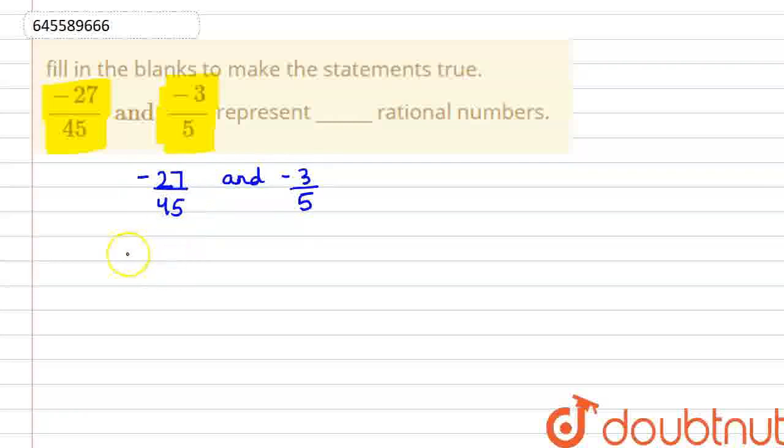Okay, so if we divide it, minus 27 divided by 9 and also denominator, 45 divided by 9. So what will be the value?